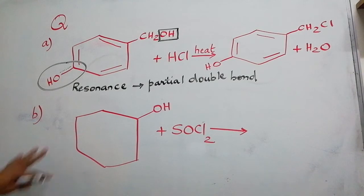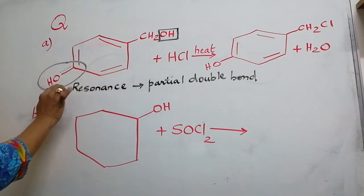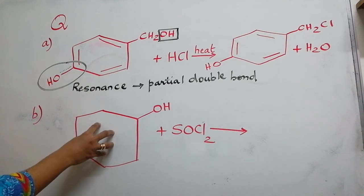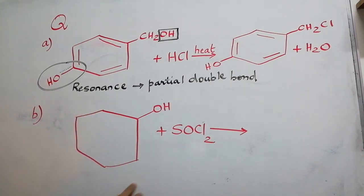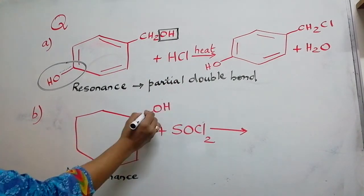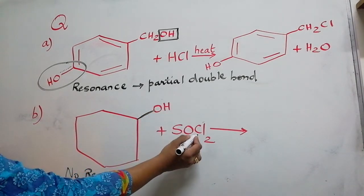Moving on to the second question. What is the difference between the first question and the second question? Here the OH is attached to the benzene ring so it involved in resonance, whereas in this structure it is called as cyclohexane and there is no possibility for the resonance. No resonance takes place and there is no partial double bond. As a result, this bond is a single bond itself. So the reaction is going to occur.